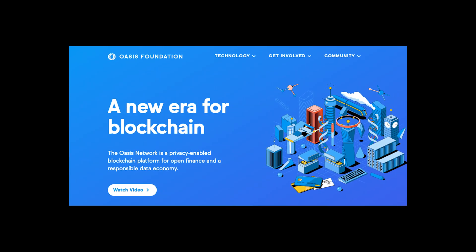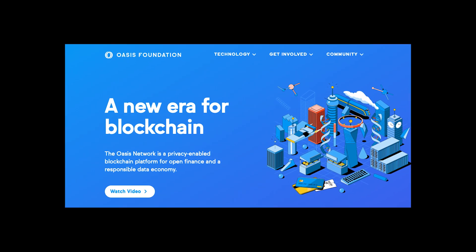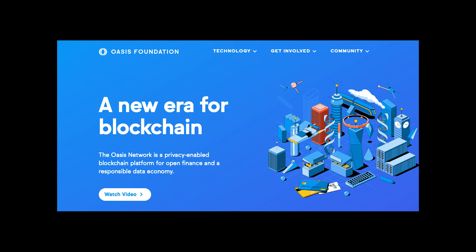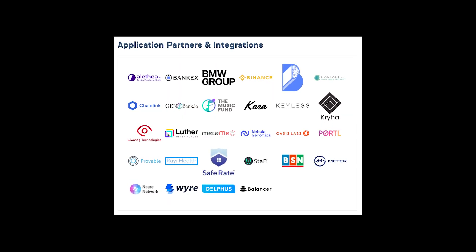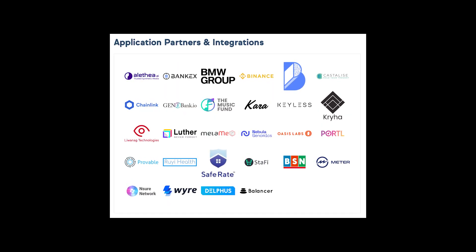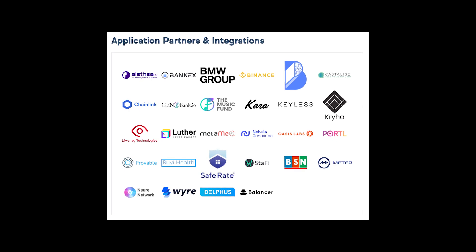But before we get into the details, check out Oasis. Oasis is the leading privacy-enabled layer one blockchain for DeFi. It was founded by Dawn Song, the award-winning professor from Berkeley, and has many key backers such as Andreessen Horowitz, Excel, Finance Labs, and more. Oasis already has several projects building on its network and partners such as the Crypto Safe Alliance with Binance, Chainlink, Balancer, Meter, and others.